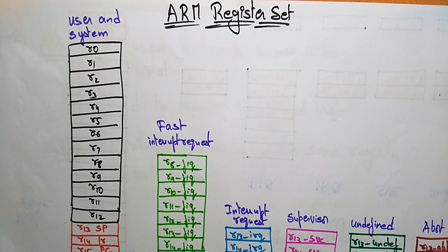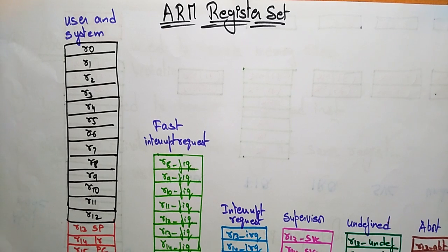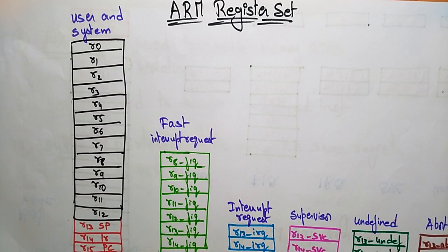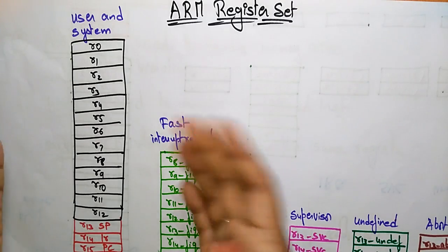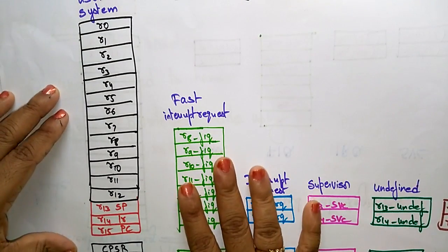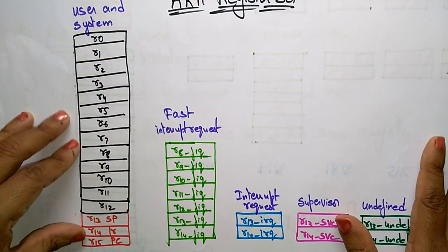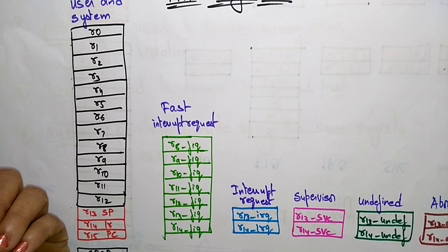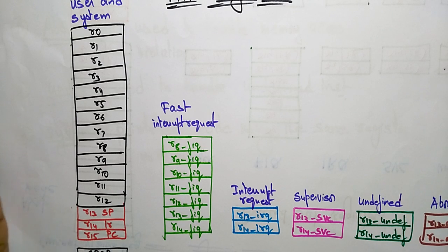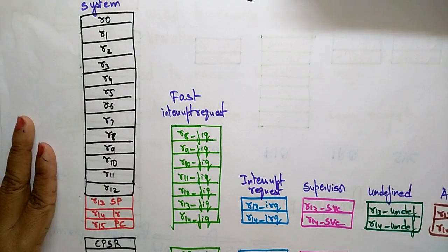Let us continue with ARM modes of operations. In the previous video I explained about the seven modes that the Advanced RISC Machine can support. These modes can fall either in privileged or non-privileged conditions. Now let's see what type of information these modes can hold — meaning which registers will be active in each mode, such as user mode, fast interrupt, and interrupt request.